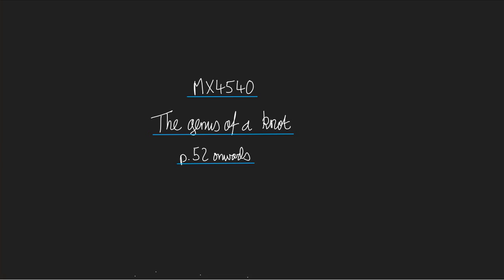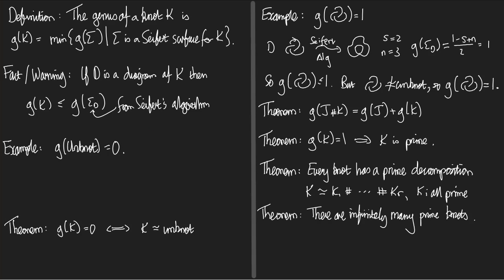Hello, here is a mini lecture about the genus of a knot, based on page 52 and onwards in our course notes. Here is the definition: the genus of a knot k, called g(k), is defined to be the minimum of the genera of the surfaces sigma, where sigma is a Seifert surface for k.